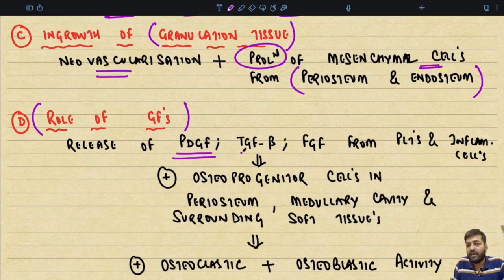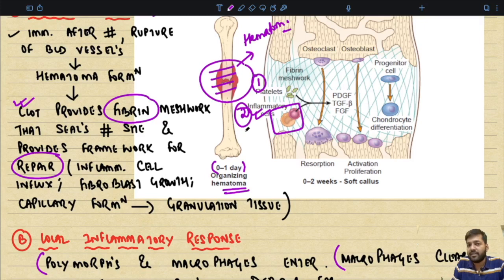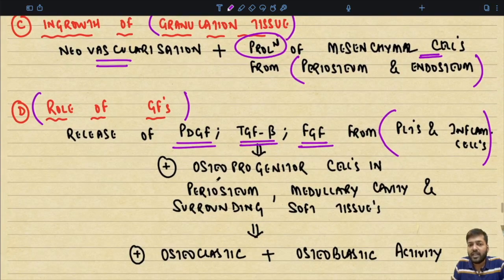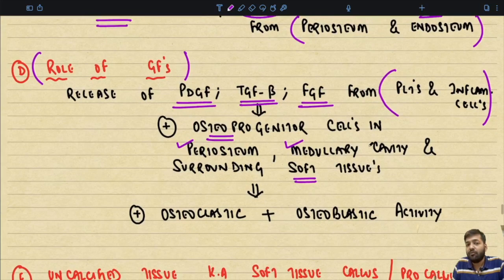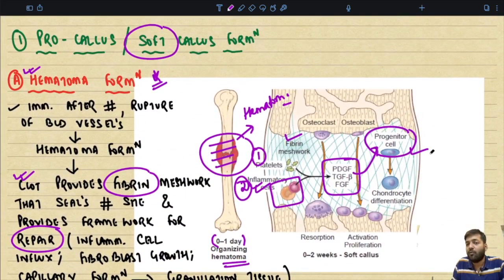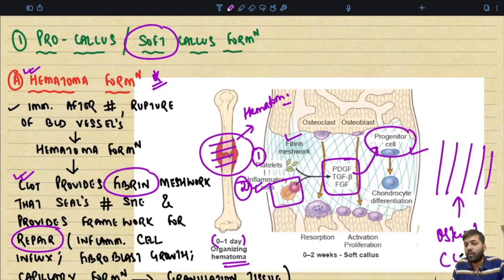All inflammatory cells and platelets at the fracture site release growth factors: platelet-derived growth factor (PDGF), TGF-beta, and fibroblast growth factor. These stimulate osteoprogenitor cells present in the periosteum, medullary cavity, and surrounding soft tissues. The osteoprogenitor cells are mobilized and once activated, they stimulate both osteoclastic and osteoblastic activity, because repair requires osteoid from osteoblasts. Osteoclasts are also required to remove excess bone that has been laid down.